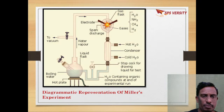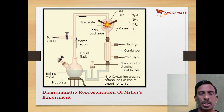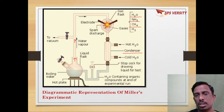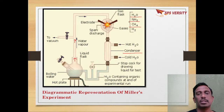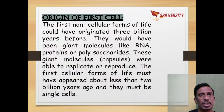This is the diagrammatic representation of Miller and Urey's experiment. Whatever water vapor comes from the boiling of water, it moves through tubes, reaches the electrode spark discharge, the reaction takes place, and condensation leads to formation of water. Chemical analysis shows lipids, proteins, and RNAs — organic molecules. This shows that from inorganic molecules, organic molecules originated.